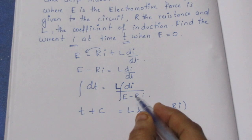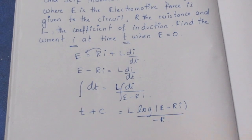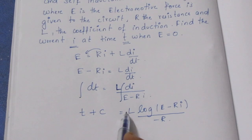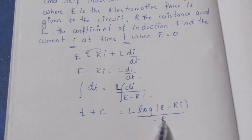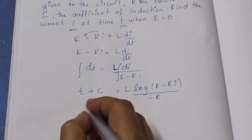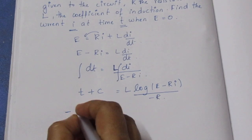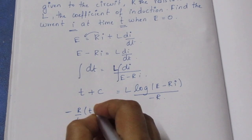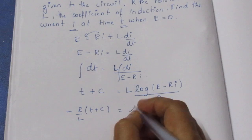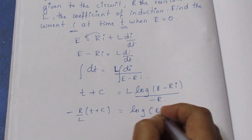So t plus integration on this gives minus R item. These two are constants, so we multiply and divide accordingly. This gives minus R by L into t plus c, which is equal to log of E minus Ri.